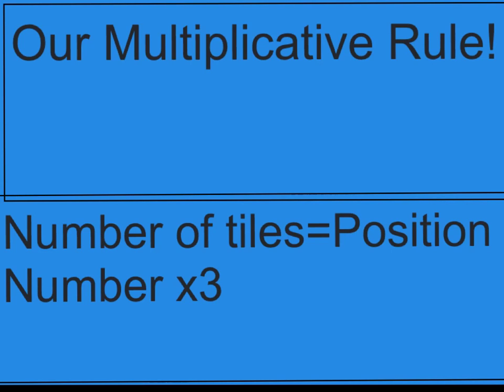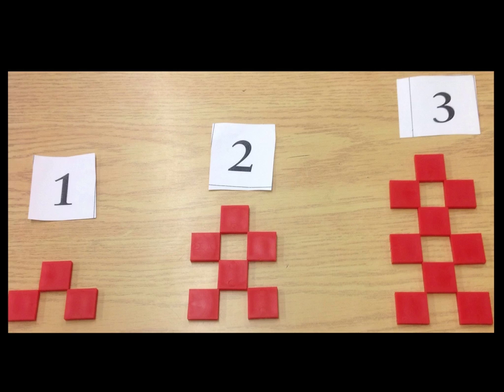Our multiplicative rule is number of tiles equals position number times 3. To figure out what your multiplier is, just look at the first position and it will give it away.